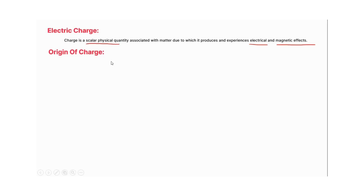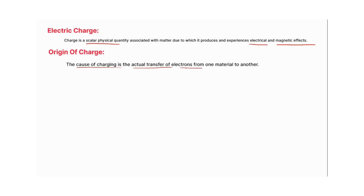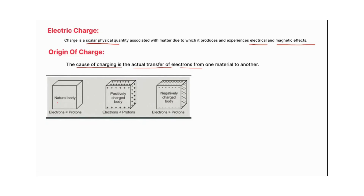An obvious question comes to mind: what is the origin of charge? The origin of charge, or the cause of charging, is the actual transfer of electrons from one material to another. In a neutral body, the number of electrons and number of protons are always equal. But when a neutral body changes to a positively charged body, it does so by donating electrons, so the number of electrons will always be less than the number of protons.